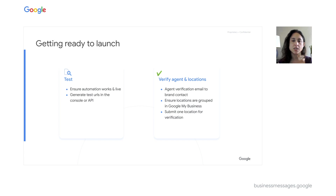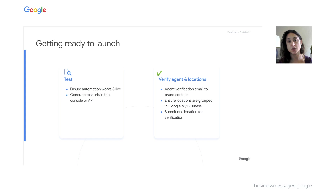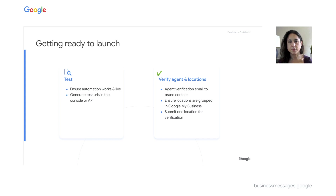If you're deploying the agent on local entry points, you'll also need to verify the locations. This step ensures that the locations the agent will go live on really belong to the brand. All verification methods are detailed on the developer site, but whatever method you use, make sure the locations you want to launch are claimed and linked together in a Google My Business group. You'll only need to submit one location for each brand, and all the locations linked together will be loaded up and approved. You can then select which ones you want to launch.